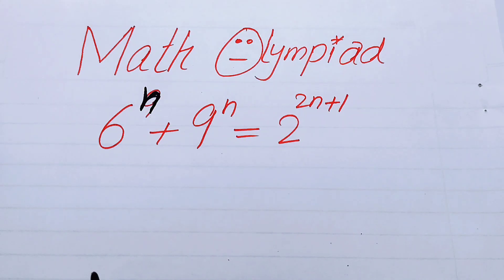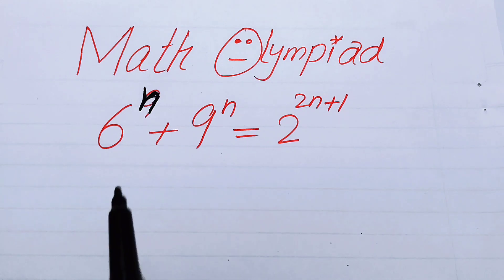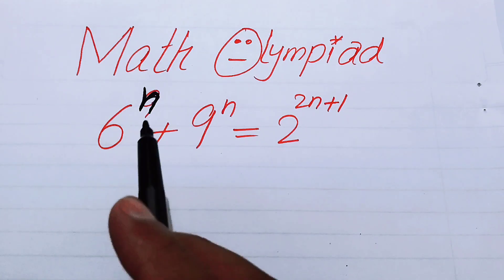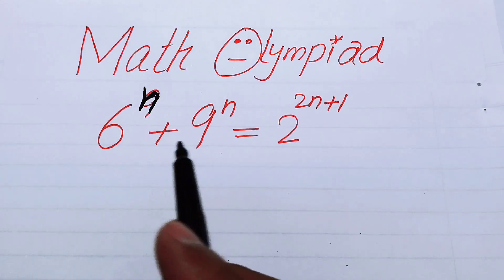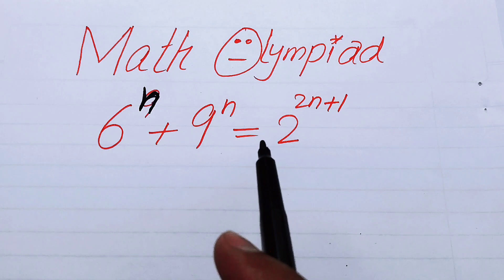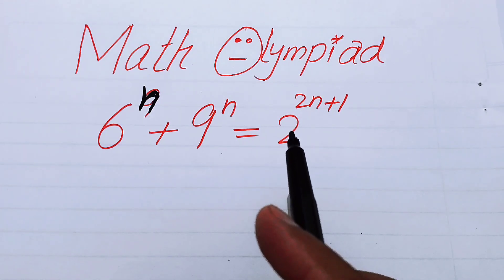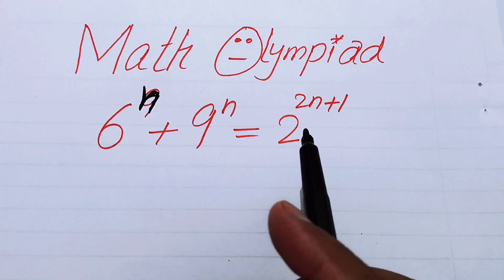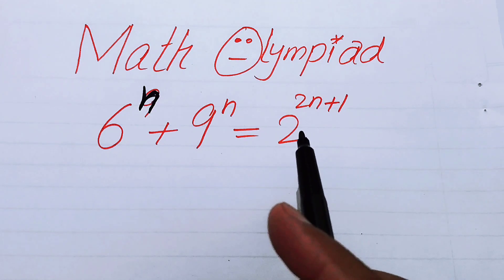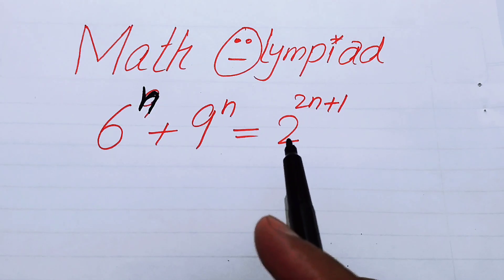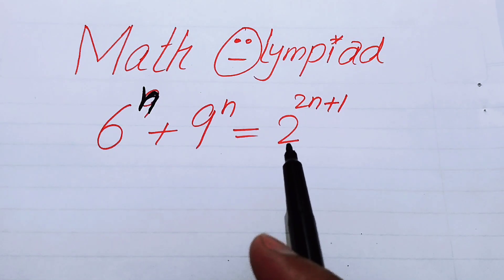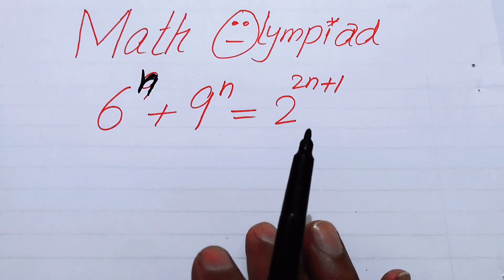Hello everyone, welcome back to the Map of Mathematics. In this video we are going to solve this nice algebra problem: 6 to the power of n plus 9 to the power of n is equal to 2 to the power of n plus 2 to the power of 2n plus 1. We will solve this problem for the values of n.